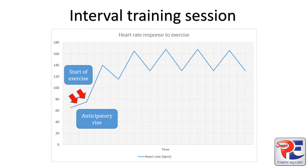This next point on the graph is when exercise starts. We can identify that exercise has started here because there is quite a steep line on our graph. Heart rate increases quite rapidly to supply blood containing oxygen to working muscles for energy.